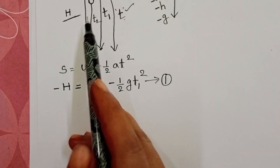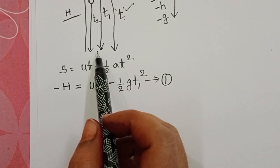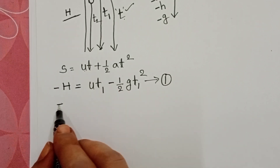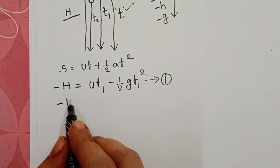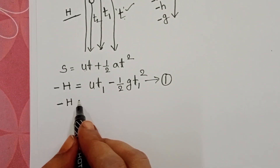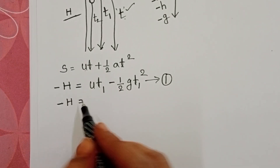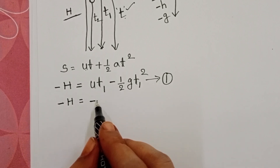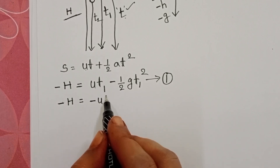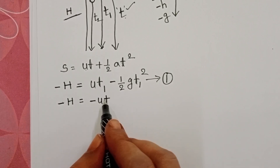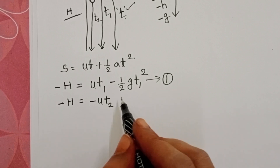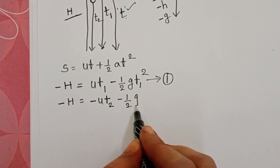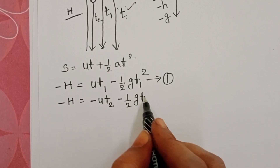The second body is projected in the downward direction with the same speed. The height is the same, so displacement is minus H because it is moving in the downward direction. Initial speed is the same magnitude but negative since the direction is downward. Time is T2, and G is negative, giving: −H = −UT2 − ½GT2². This is equation 2.